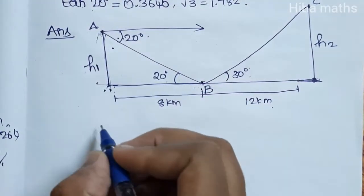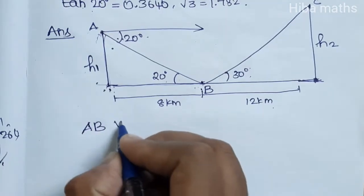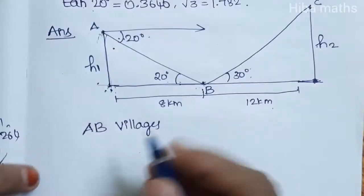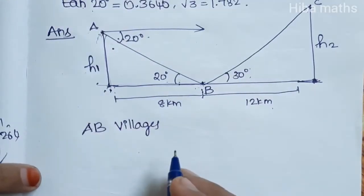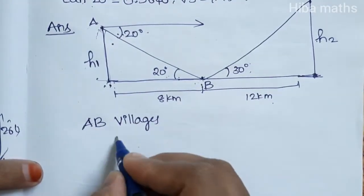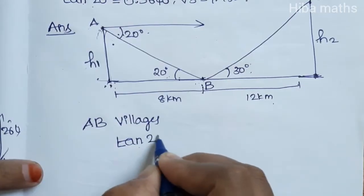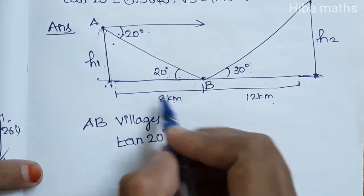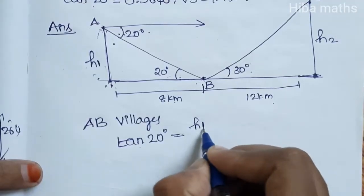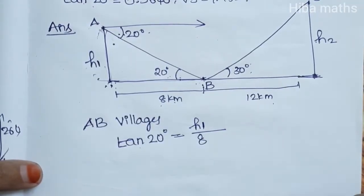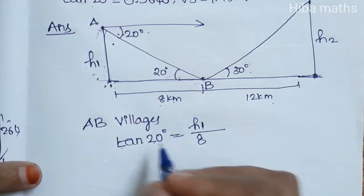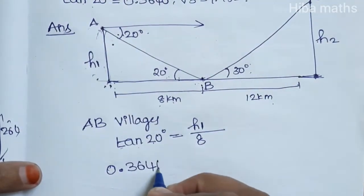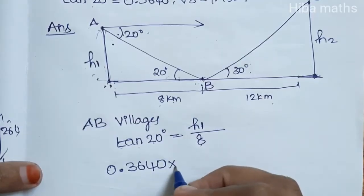Let's take the height of AB Village. Tan 20 degrees is equal to opposite by adjacent. Opposite is h1, adjacent is 8. So tan 20° equals h1 over 8. We have 0.3640 in the equation.